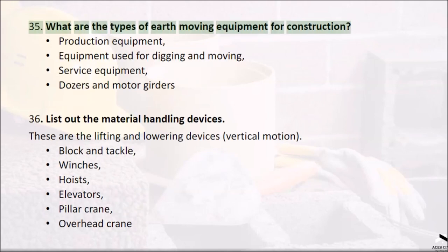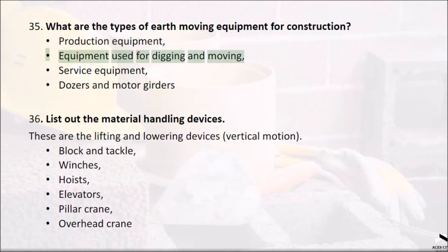Question 35: What are the types of earth moving equipment for construction? Production equipment — equipment used for digging and moving; service equipment — dozers and motor graders.